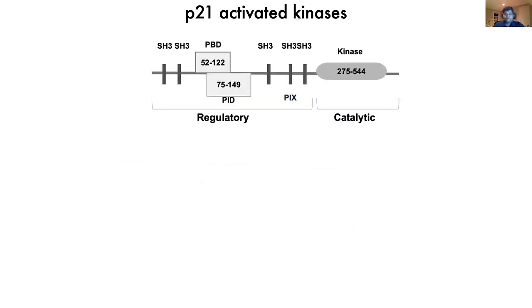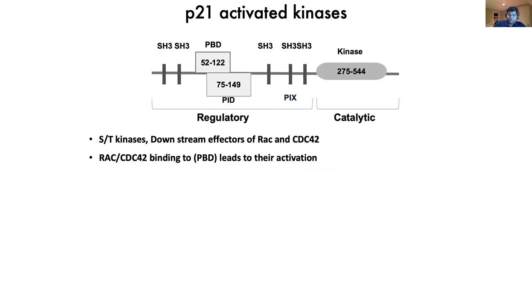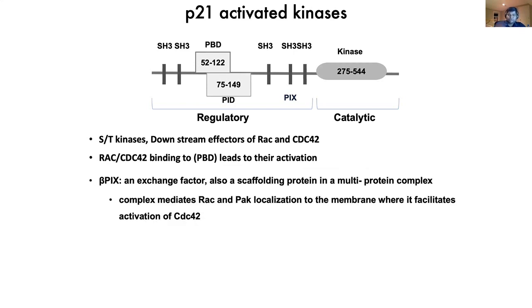PAK kinases are serine-threonine kinases with a C-terminal kinase domain and multiple protein-protein interacting domains. RAC or Rho-GDP binding in the PBD domain induces a structural change that activates PAK2 kinases. One factor contributing to activation is beta-PIX, an exchange factor and multimeric protein complex that activates RAC by exchanging GDP for GTP.